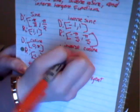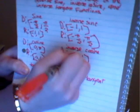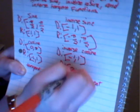The domain for the inverse cosine is going to be negative 1 to 1, and the range is going to be what the domain of the cosine was for the inverse cosine. So the range is going to be 0 to pi.